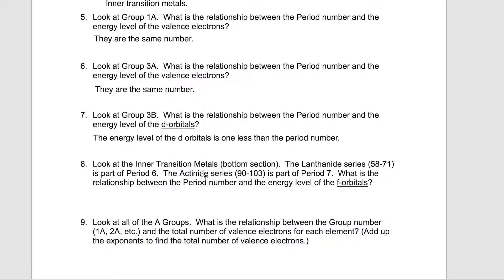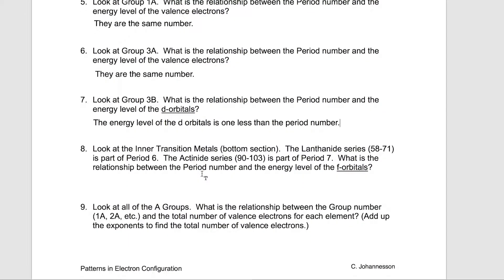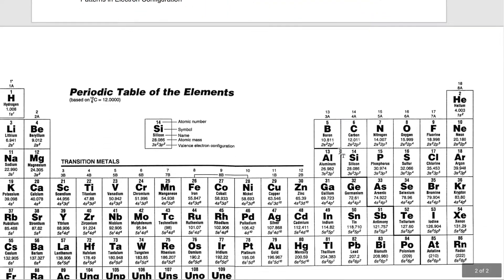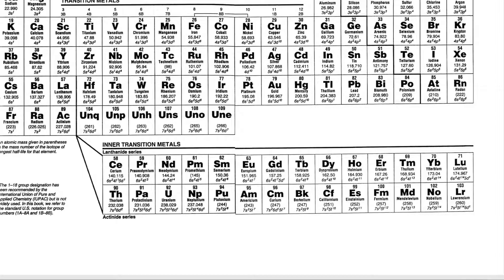The inner transition metals — we're going to check the inner transition metals with the period number. They are period 6 and 7 only, and we're looking at the energy level number of the F orbitals. That's period number 6; you go over here and find the F orbitals — the energy level of the F orbitals is 4. Period number 7 — the F orbitals are 5. So the energy level of the F orbitals is 2 less than the period number.